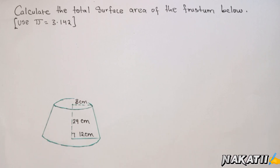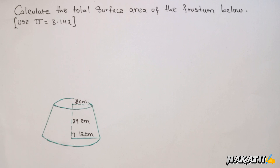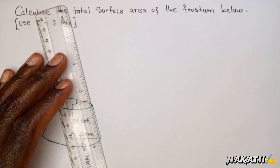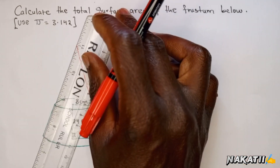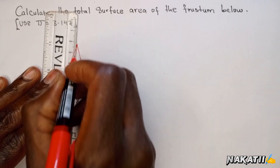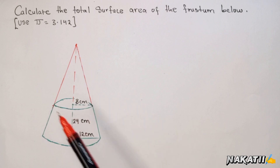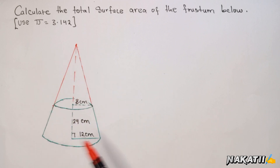Hello, welcome. We have a question: calculate the total surface area of this frustum below, using pi as 3.142. This frustum was cut from a cone. We can try to complete it and see how it looked like. So this is how the cone looked like before the upper part was cut to form this frustum.